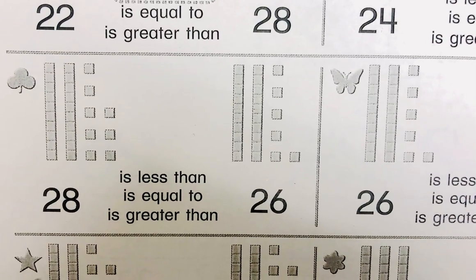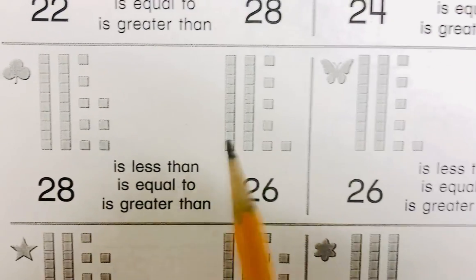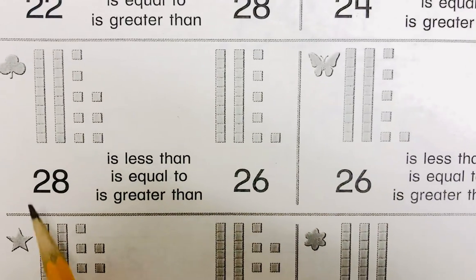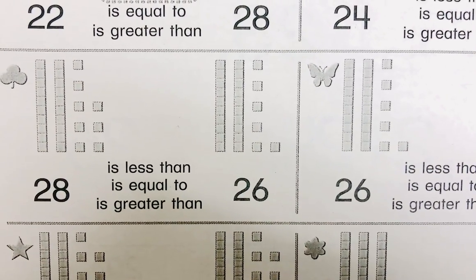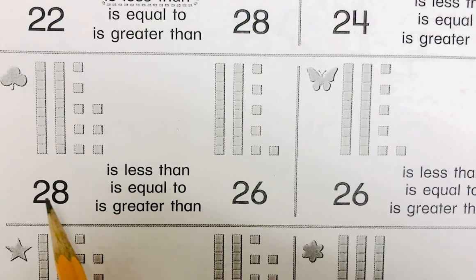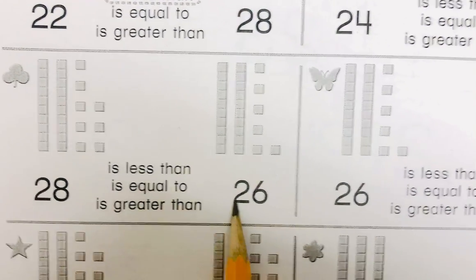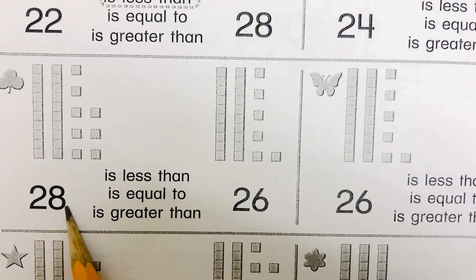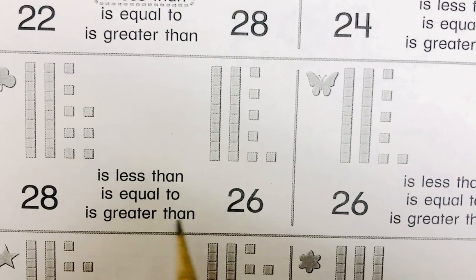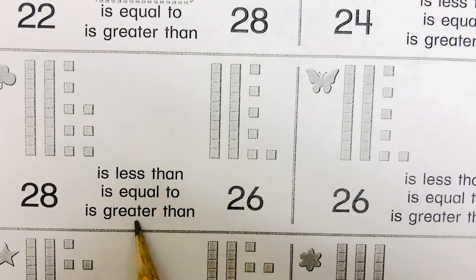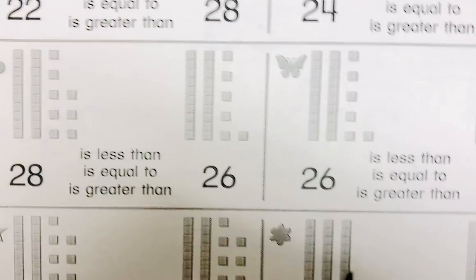So is 28 less than 26? No. Right. 28 is equal to 26. Well, that we already know. No. Is 28 greater than 26? Yes. Because even though they both have two groups of 10, eight is more than six. So 28 is greater than 26. So circle greater than.